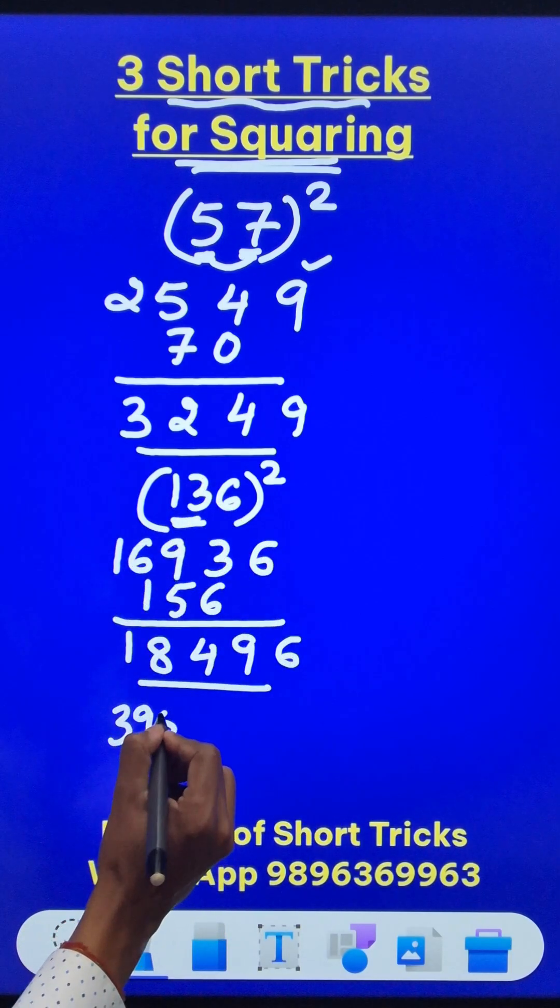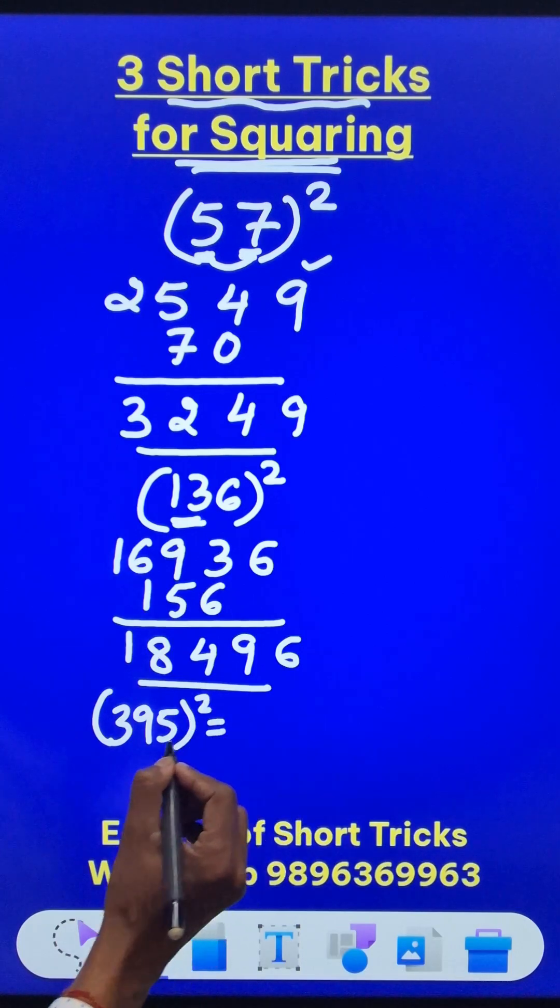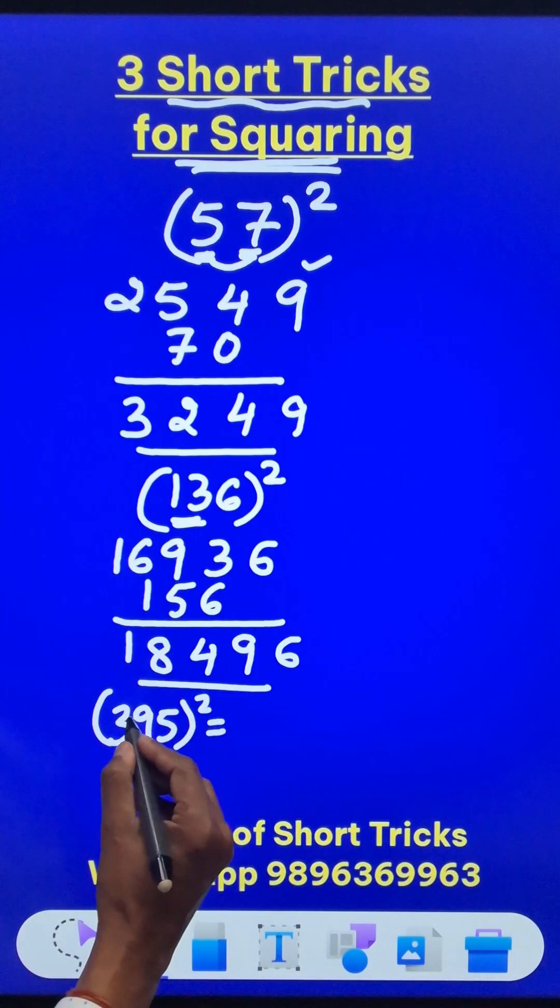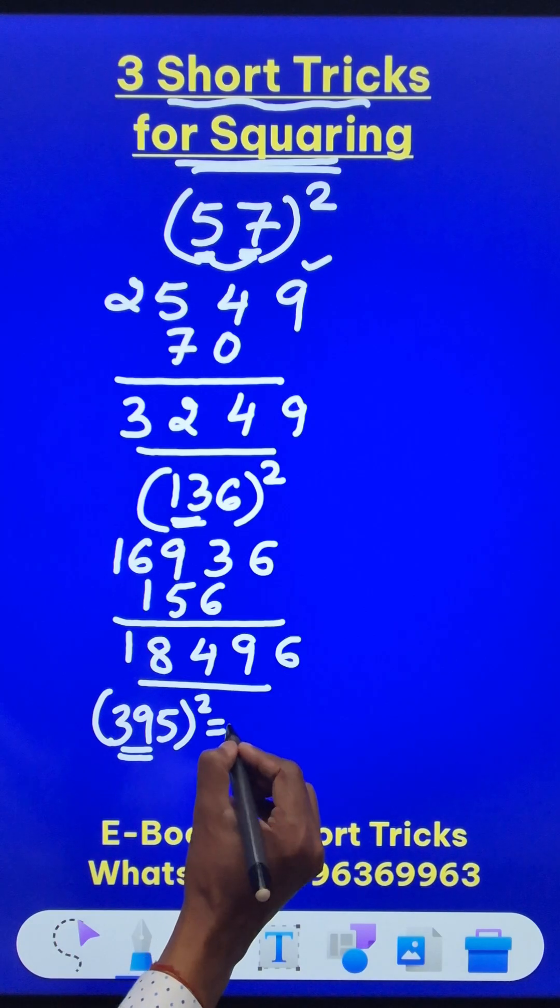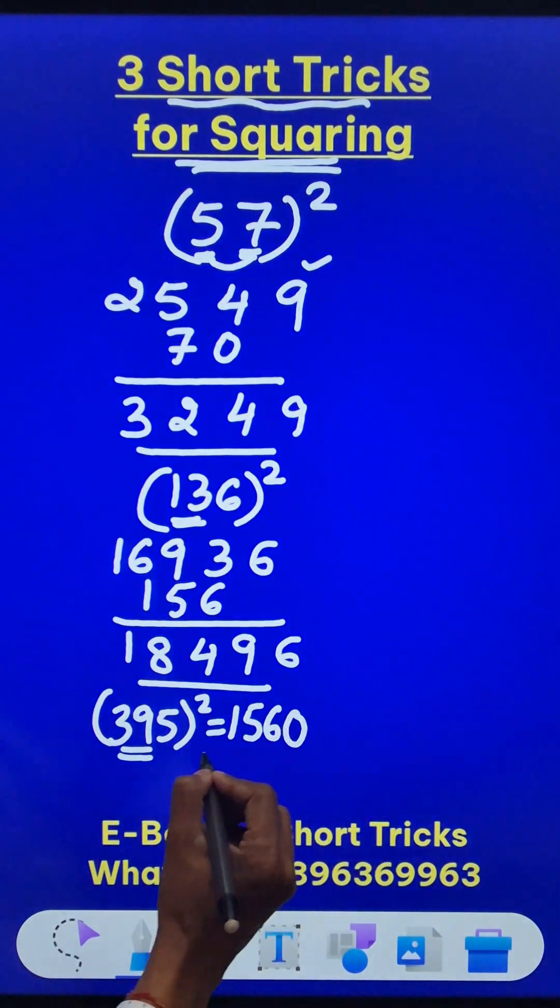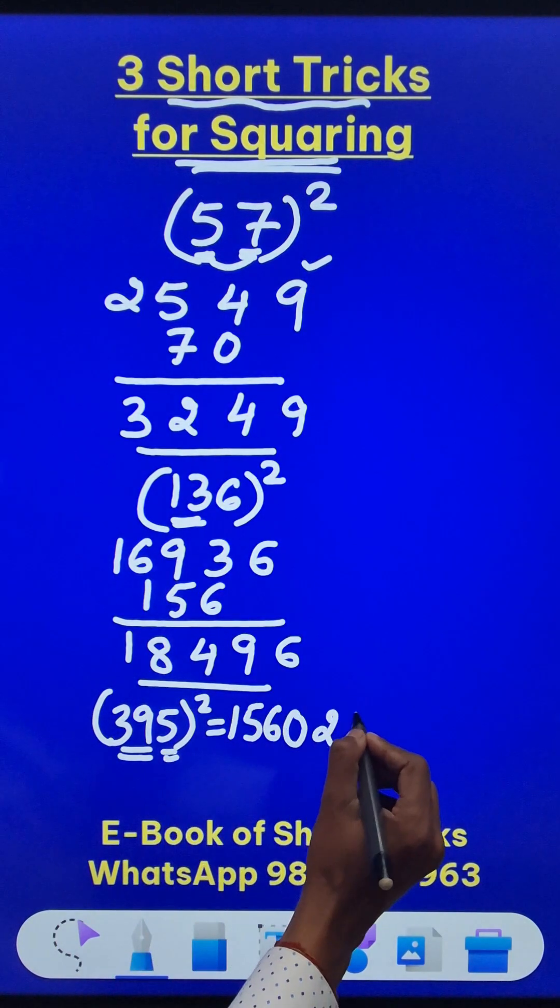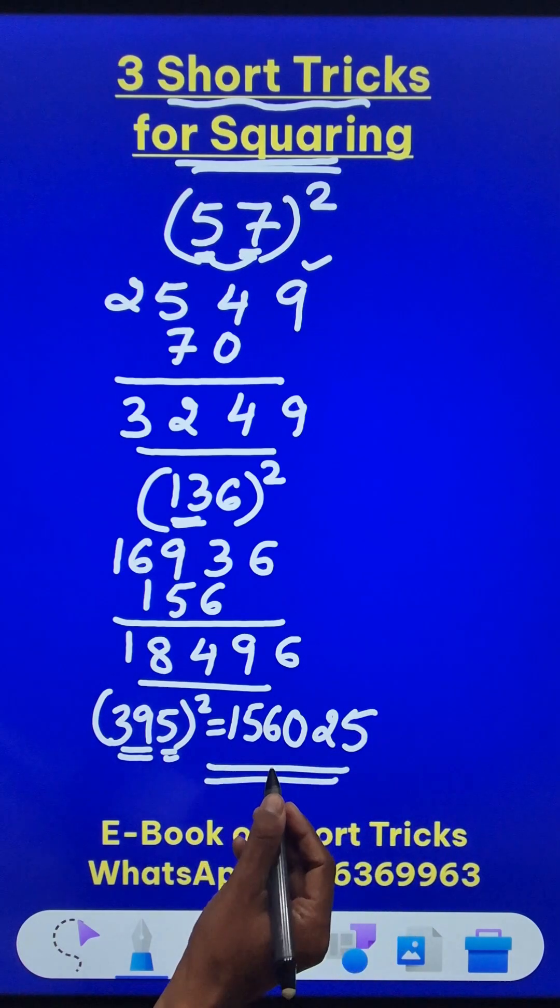Likewise 395 square. This can be done using Vedic Maths. 39, the first number is to be multiplied by the consecutive number 40. So 39 times 40 will give 1, 5, 6, 0 and 5 square is 25. Just suffix 25 you get the desired square.